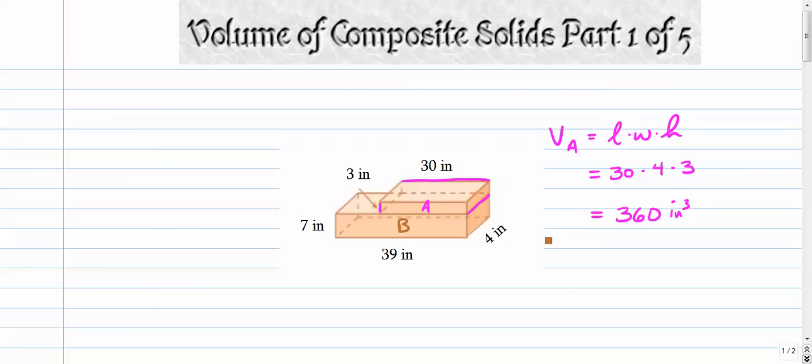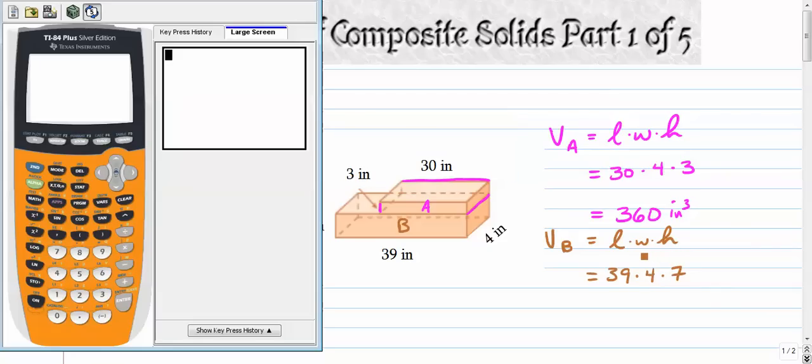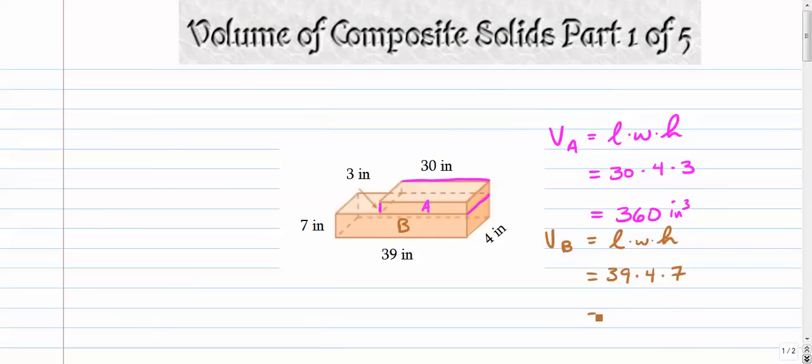Now let's come back and do the volume of the bottom prism. The bottom prism is also rectangular. So we're going to go length times width times height. It's 39 times 4 times 7. 39 times 4 times 7, that's 1092. So we have 1092 cubic inches.